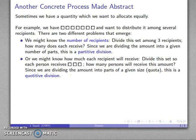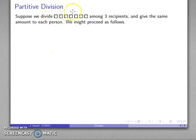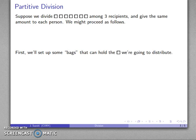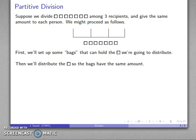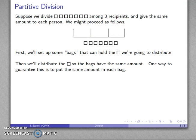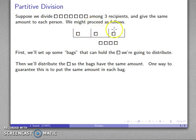Let's take the partitive division example. I have this collection and I want to split it up among three recipients, giving the same amount to each person. One way to solve this: I'll set up some bags — places I can put the things I'm distributing. Here I have one, two, three recipients, so I'll have one, two, three bags. I have a whole bunch of things to distribute, so I'll take sets of three and place one into each bag — that's one, two, three. I'll take another set and put one in each bag again — that's one, two, three more.